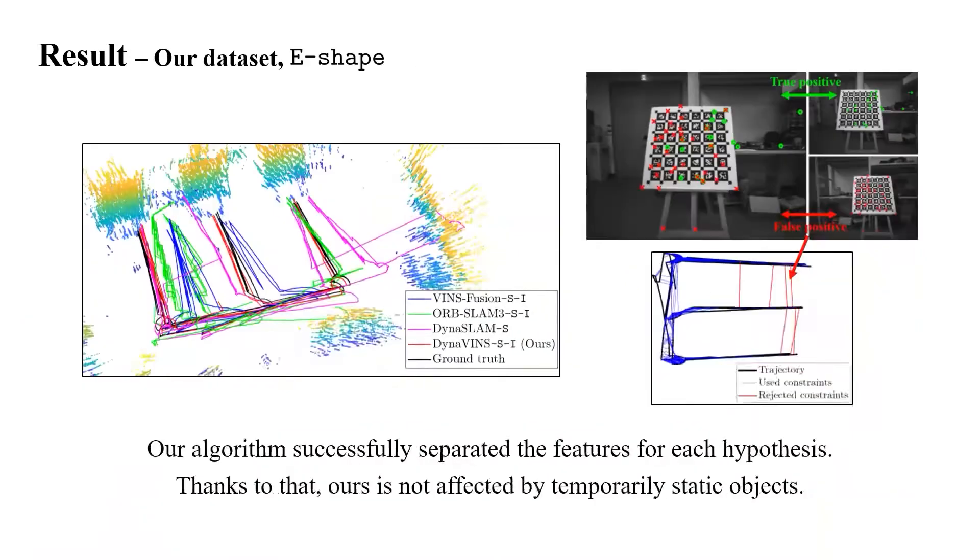On our dataset, especially on E-shape sequence, the marker plate is moved and placed into three end vertices while not being observed. As shown in the figure, there can be false positive and true positive loop closures on a single image. But our algorithm successfully separated the features for each hypothesis. Thanks to that, ours is not affected by temporarily static objects.